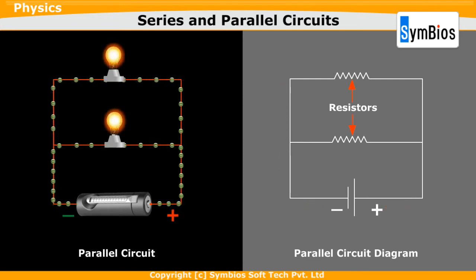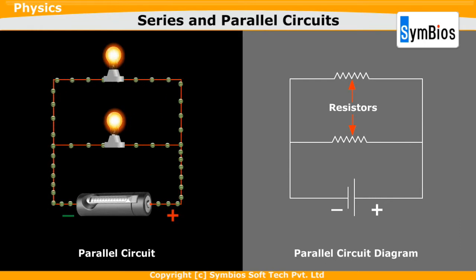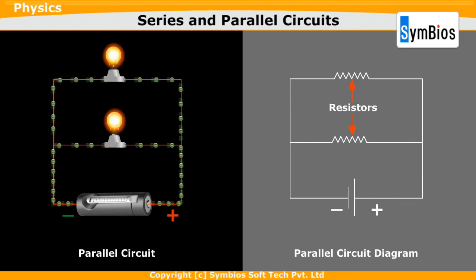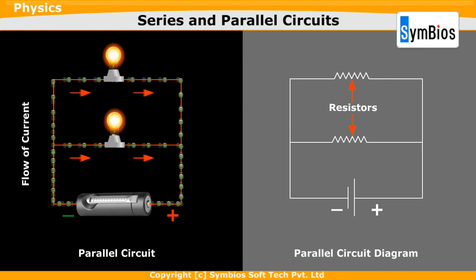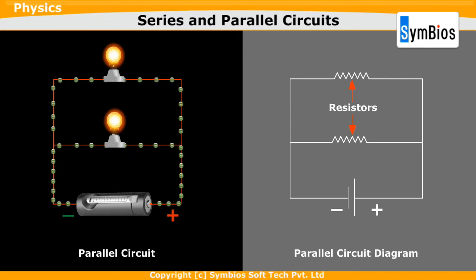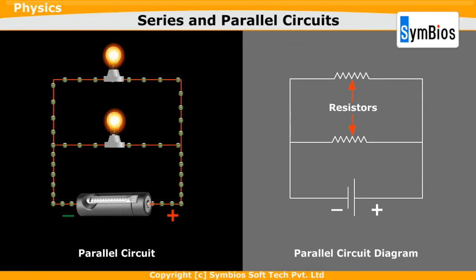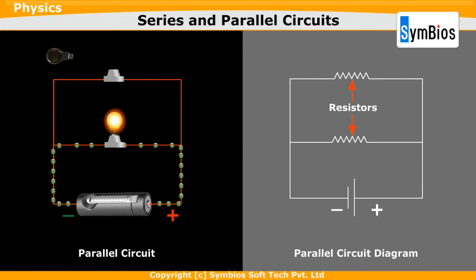This is a parallel circuit with two bulbs. In a parallel circuit, there are two separate paths for the flow of current as shown here. In a parallel circuit, even if one light is removed, the other continues to work.